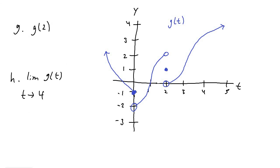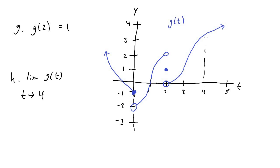For letter g, we have just g of two — no limit notation, so this is asking whether the value exists when we plug in two for t. There is a shaded point at t equals two, and that value is exactly equal to one, so g of two equals one. Finally, for the limit of g of t as t approaches four, both the left-hand limit and the right-hand limit approach the value of three, so the limit of g of t as t approaches four equals three.